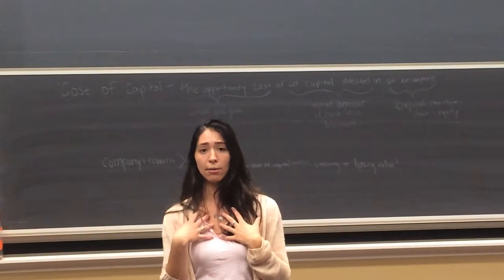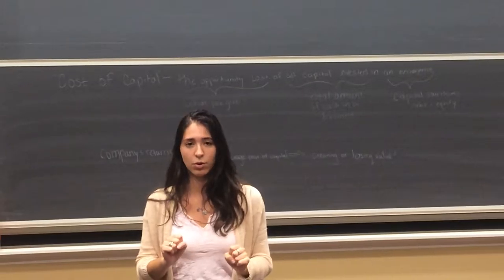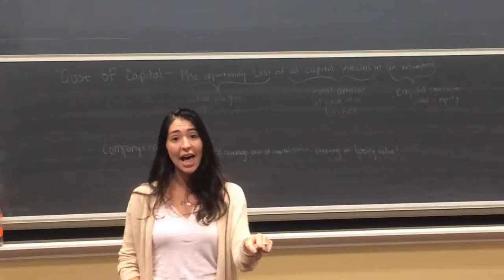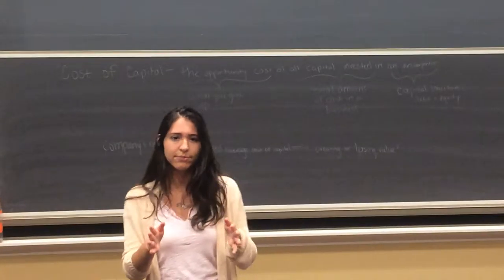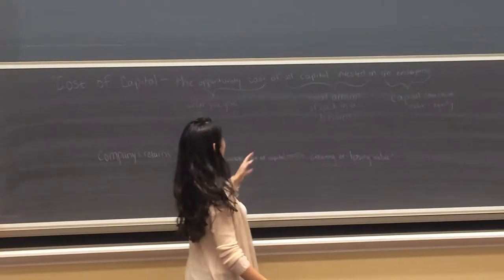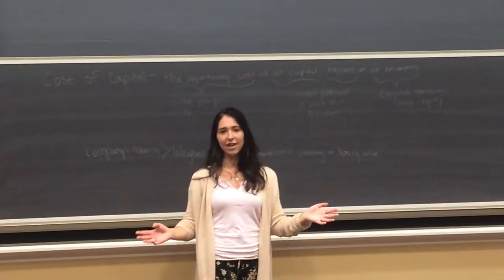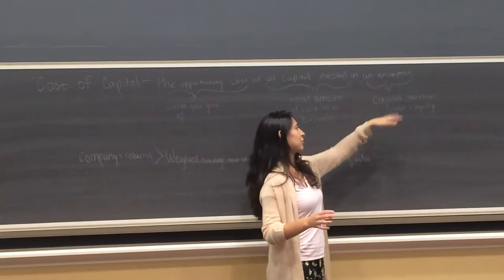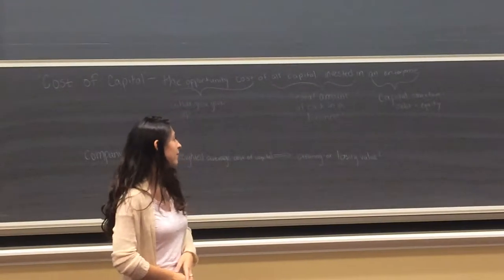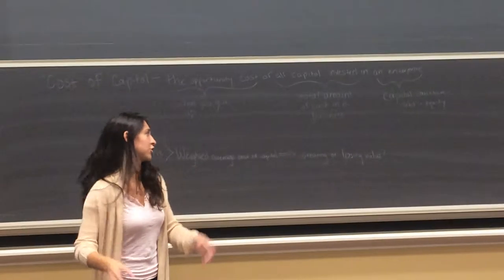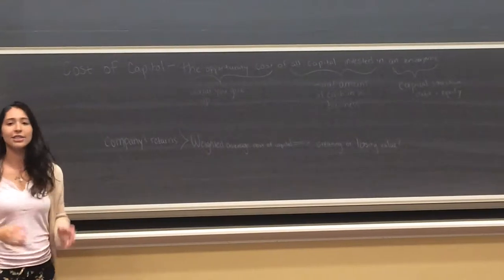So let's say I have the option of investing in project A or project B. I can't invest in both. I need to invest in one. Well, my opportunity cost of investing in project A will be the return I would have gotten when I invested in project B. So then there's that all capital invested portion. And this is just talking about the total amount of cash in the business. And then an enterprise. So this is referring to the opportunity cost of investing in the whole capital structure. So it's referring to both debt and equity. And that's important to keep in mind as we go through it.